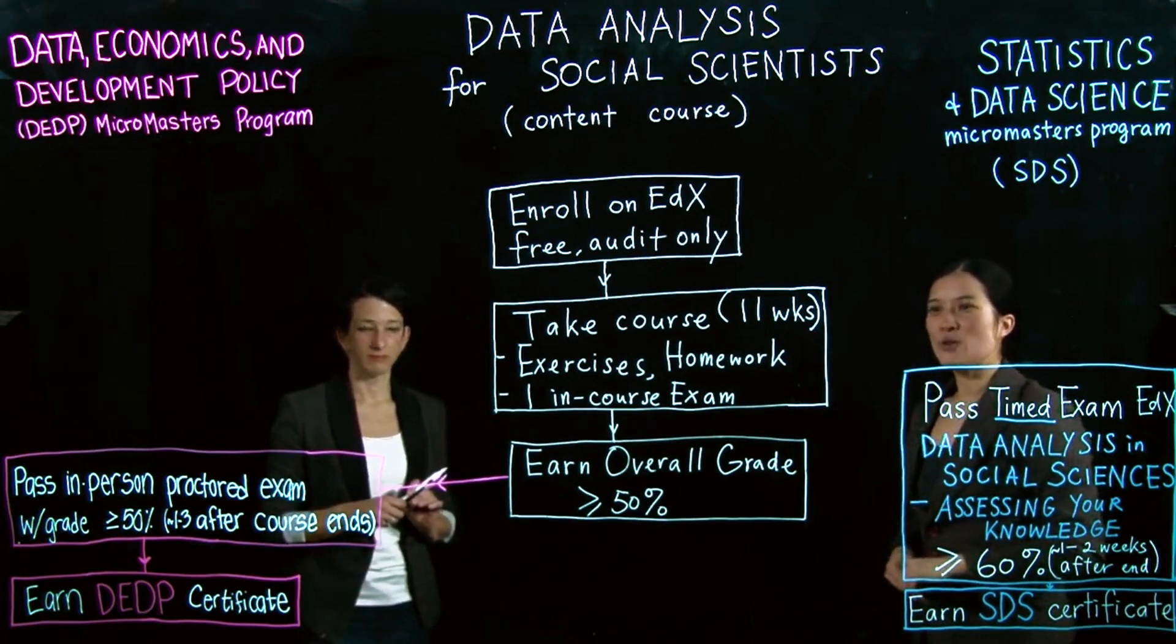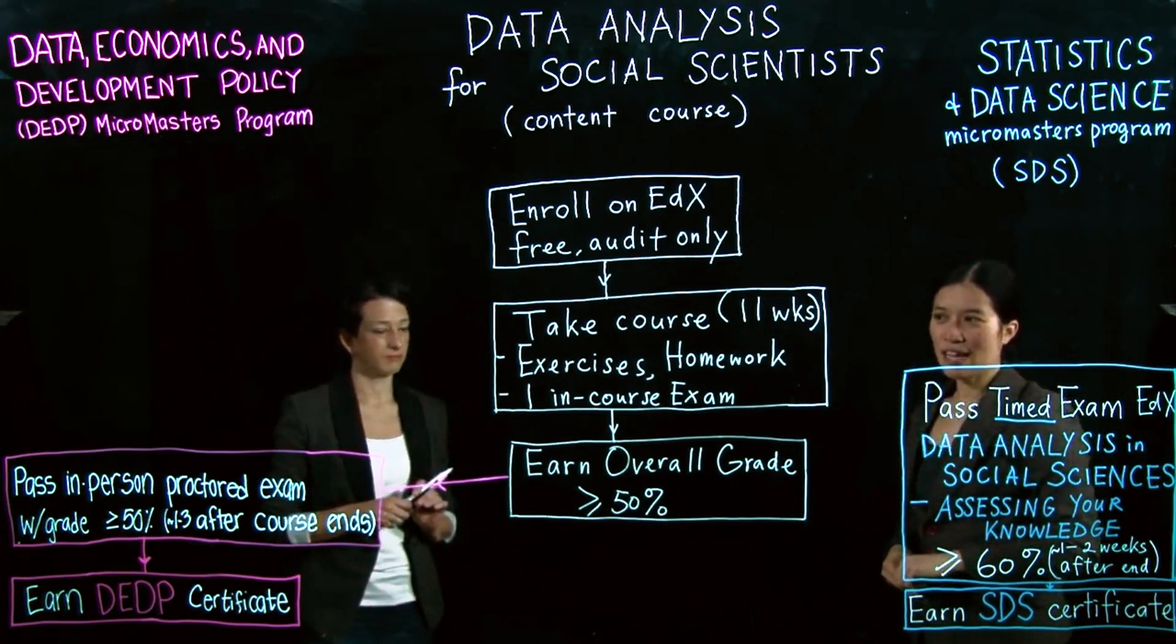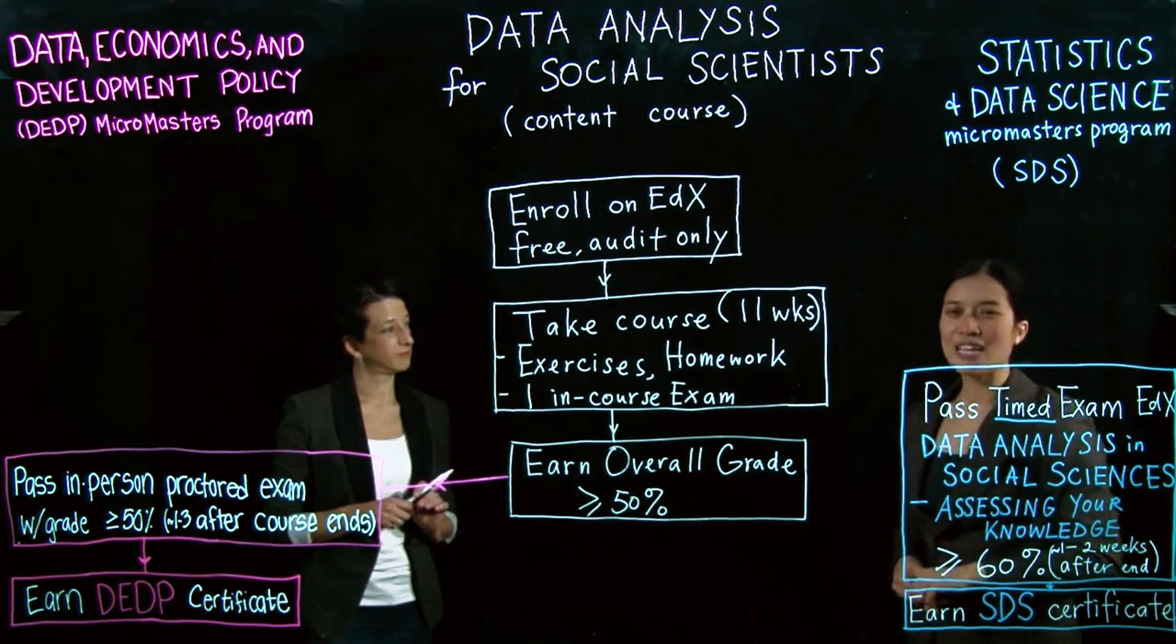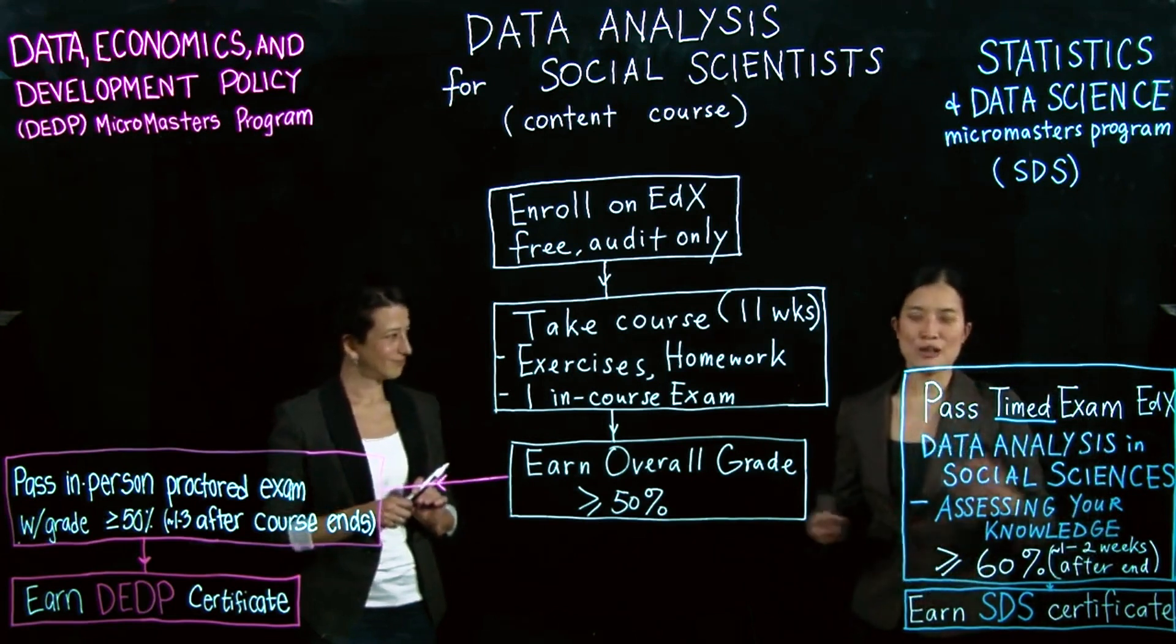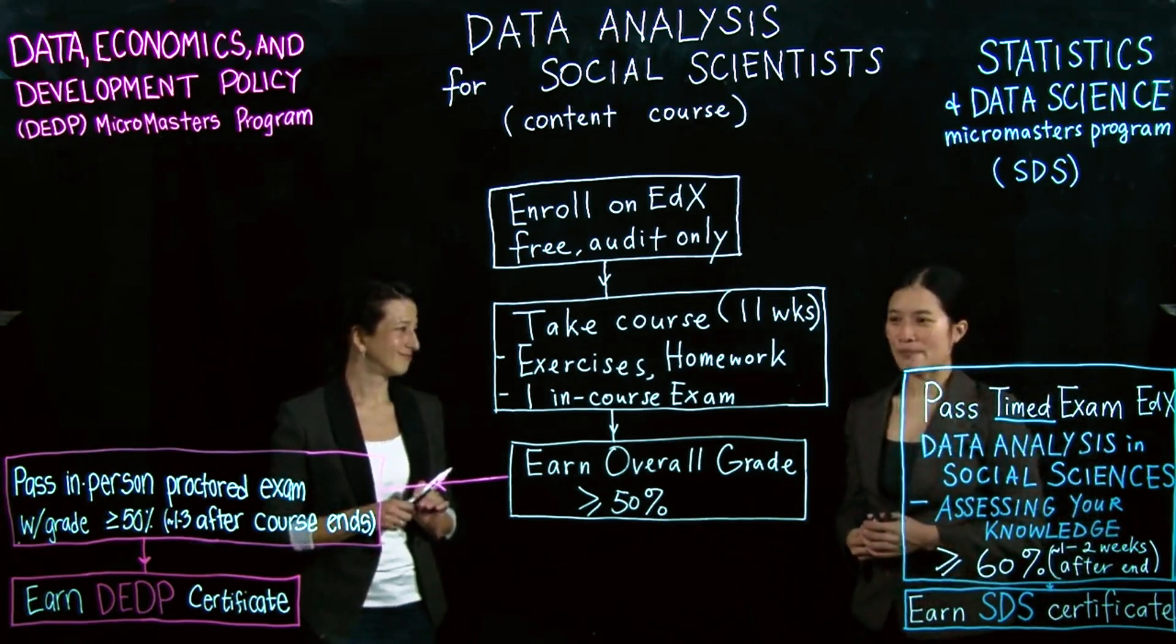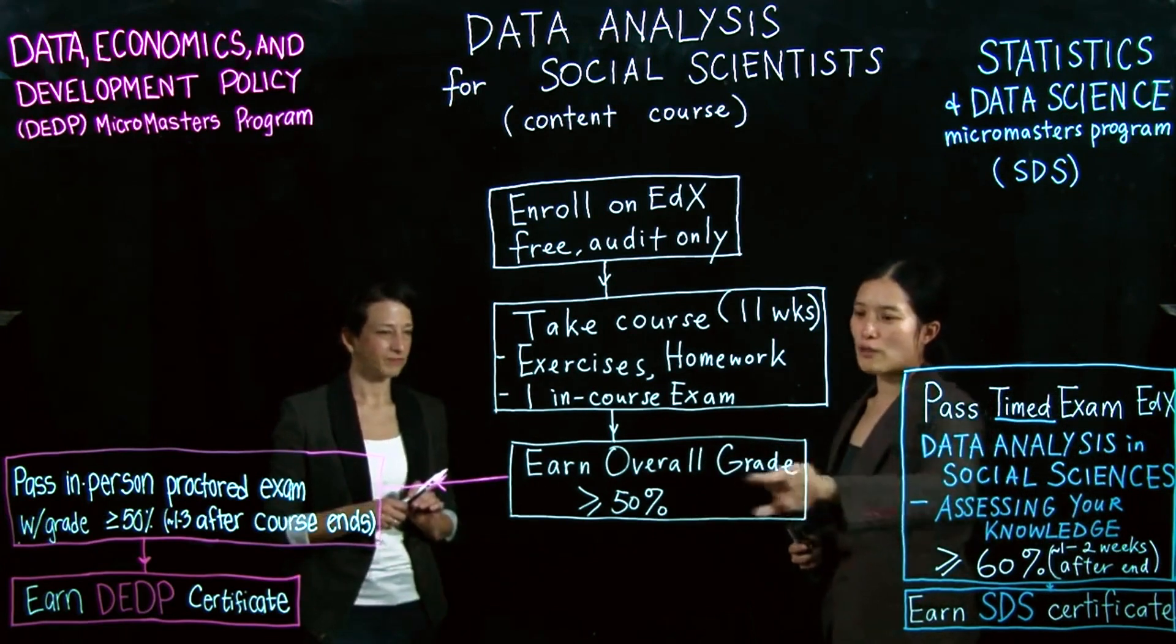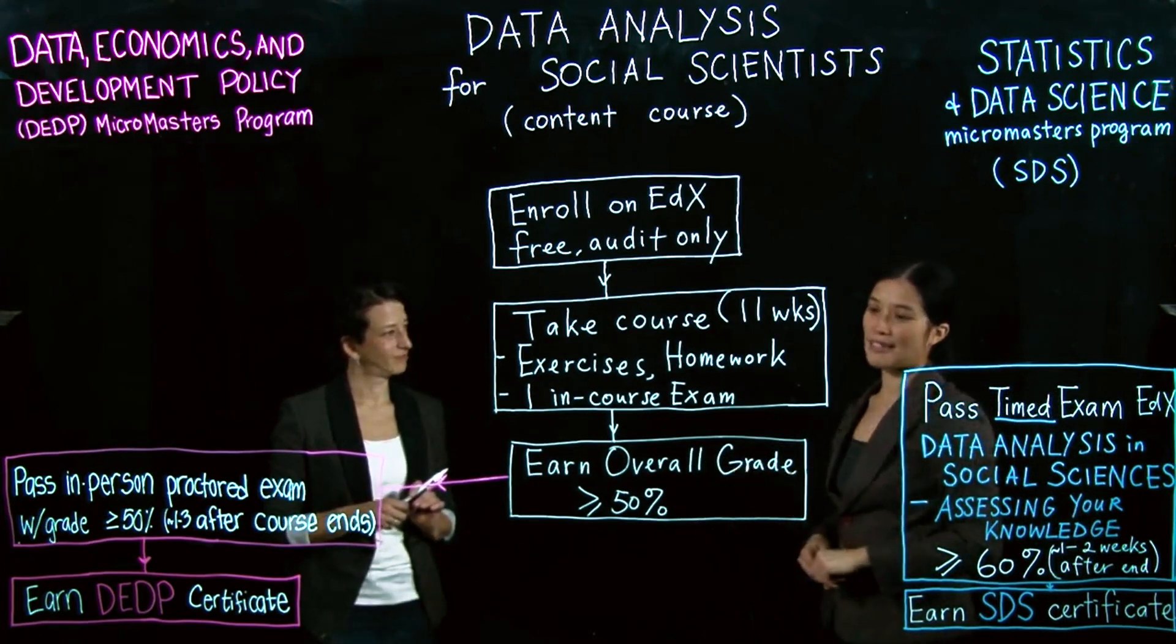You will then take the course, which lasts 11 weeks roughly. You will do finger exercises, homework, and there's one in-course final exam. You will share your ideas with fellow learners on the discussion forum. To pass the course, you need to earn an overall course grade of greater than 50%.